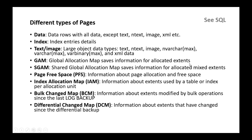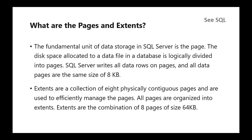Other page types include: GAM (Global Allocation Map), which saves information about allocated extents; SGAM (Shared Global Allocation Map), which saves information about allocated mixed extents; PFS (Page Free Space), which stores information about page allocation and free spaces; IAM (Index Allocation Map), which stores information about extents used by a table or index per allocation unit; Bulk Changed Map, which stores information about extents modified by bulk operations since the last log backup; and Differential Change Map, which stores information about extents that have changed since the last differential backup. These are the page types used by SQL Server to store data in the data file.